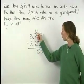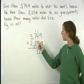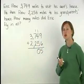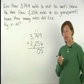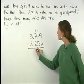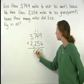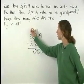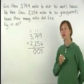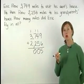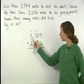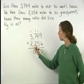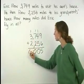Now in the hundreds column, we have 1 plus 7 plus 2, which is 10. So we write a 0 in the answer and carry the 1. Then 1 plus 3 plus 2 is 6.